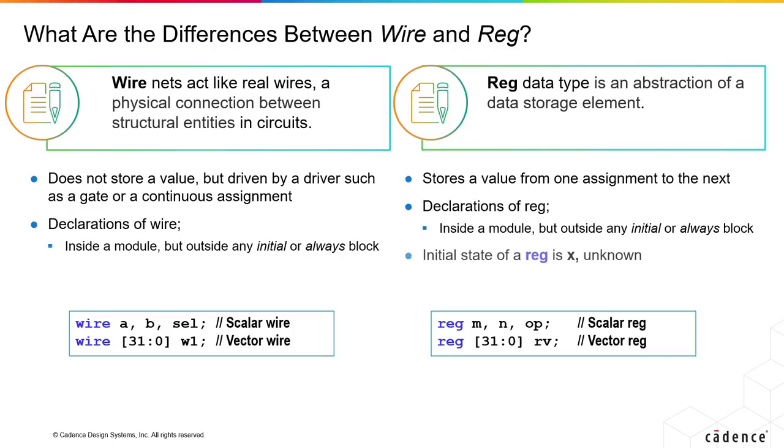Also, the registers have a default value of X, which is unknown, because you don't know what is there in the register until you put something into it.